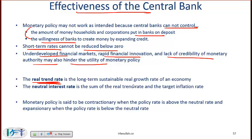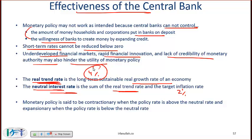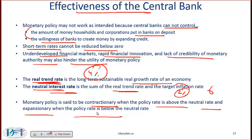The real trend rate is the long-term sustainable growth rate of an economy. The neutral interest rate is the rate at which there is neither inflationary pressure nor pressure to slow down the economy. The neutral interest rate is the sum of the trend rate and the target inflation rate — for example, if an economy is growing at 4% long-term and the target inflation rate is 2%, the neutral interest rate would be 6%. A rate higher than 6% would slow the economy down; a rate lower than 6% would be considered expansionary. Monetary policy is contractionary when the policy rate is above the neutral rate, and expansionary when below it.